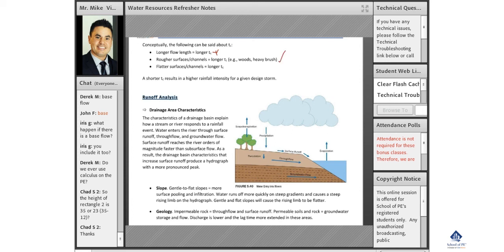This is definitely true. Rougher surfaces have longer TC. If you have water on pavement versus water on heavy brush, the water on pavement is going to move a lot quicker. So you'll have a shorter TC.